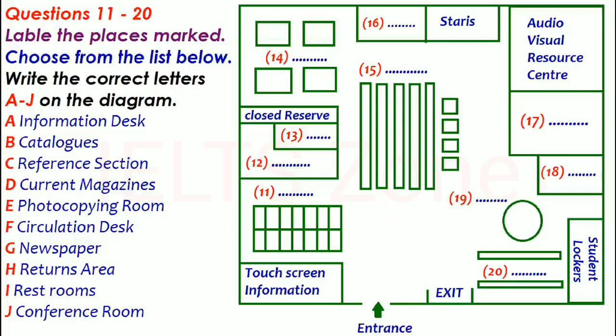You can buy a photocopy card from the technician in charge of the photocopying room or from the information desk if he isn't there at the time. On our right, these work tables are for student use, especially for small groups to work together. Or you and your colleagues can use the conference room, which is that small room there next to the lockers.